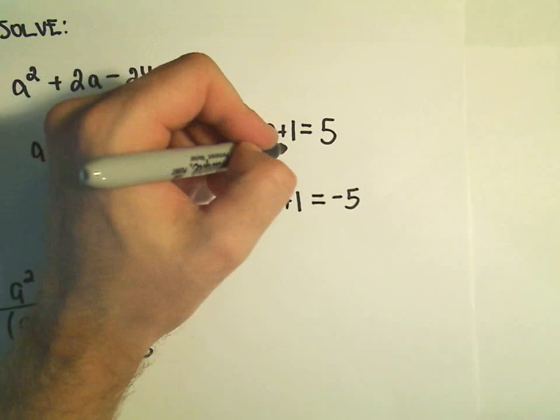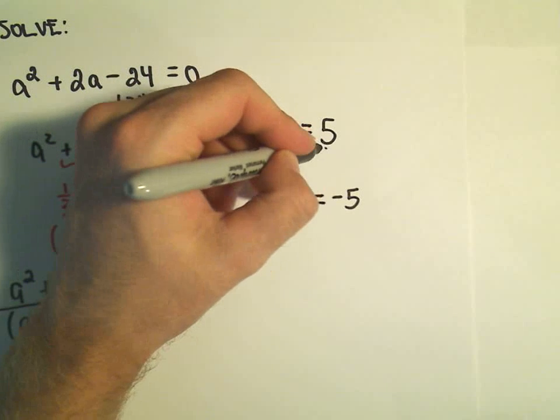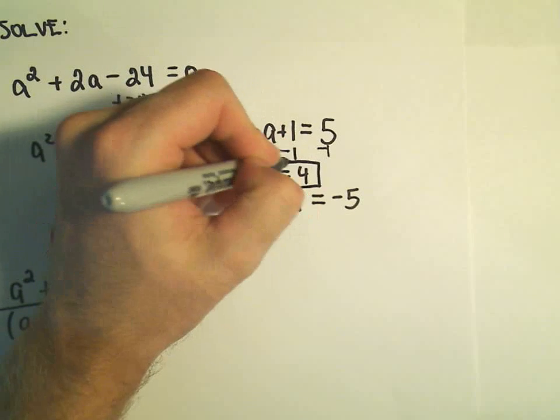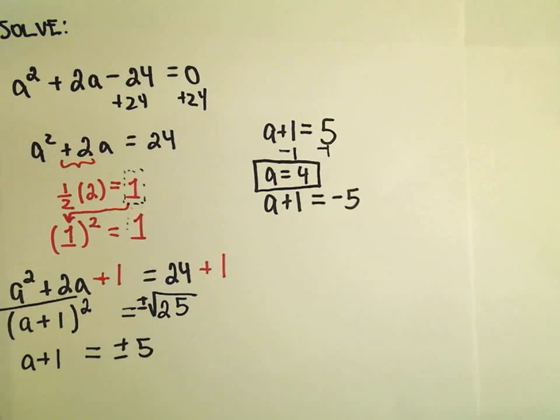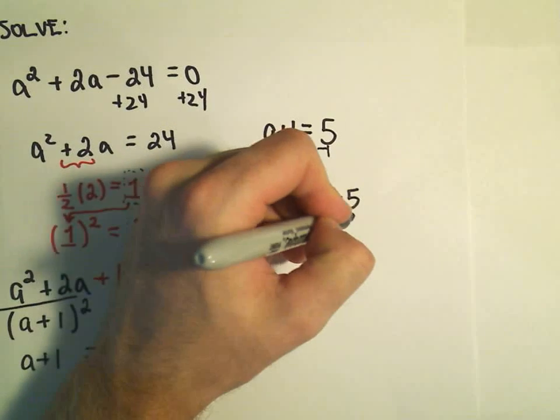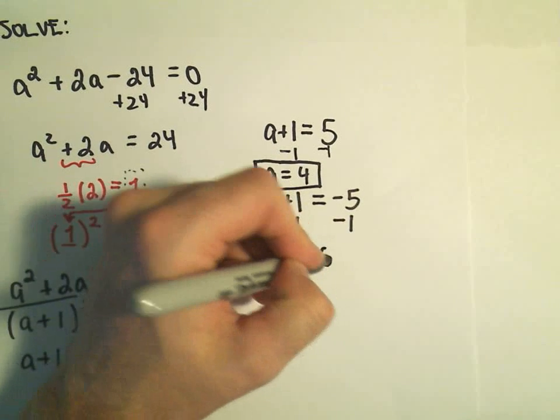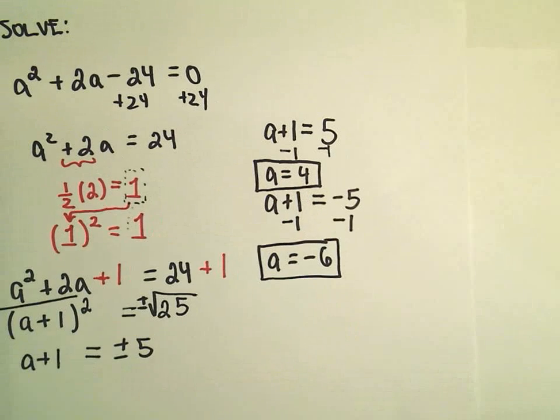And then, again, we simply solve for a. So I'm going to subtract 1 from both sides. That'll give us a equals positive 4 as one of our solutions. And then I'm going to subtract 1 from both sides. And that'll give us a equals negative 6 as our other solution.